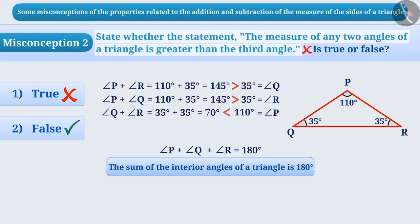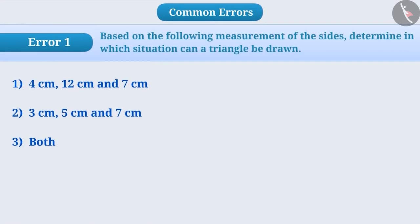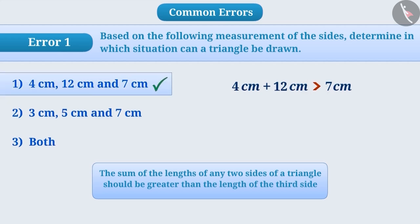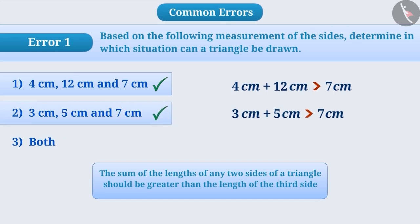Now let us know about some common errors. Error 1: Based on the following measurements of the sides, determine in which situation a triangle can be drawn. Some children know that when the sum of the lengths of any two sides is greater than the third side, a triangle can be constructed. They check that 4 cm plus 12 cm is greater than 7 cm, so option 1 seems correct; and 3 cm plus 5 cm is greater than 7 cm, so option 2 also seems correct. Since both options appear correct, they give option 3 as the answer — but this is incorrect.